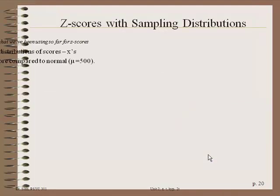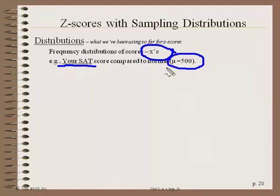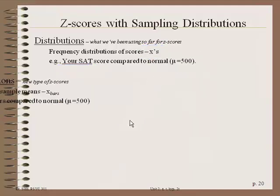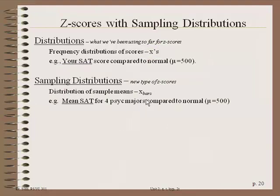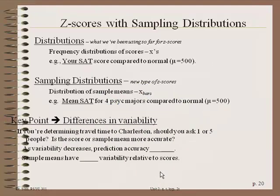The next topic is Z-scores with sampling distributions. So far we've covered distributions where we have a distribution of scores — just individual X values. For example, your SAT score would be a score, and you could compare it to mu equals 500 to get a Z-score. Sampling distributions instead have a distribution of sample means — X-bar — and we're looking at a mean, like the mean for four psychology majors, compared to mu. So we're going to have two different kinds of Z-scores.